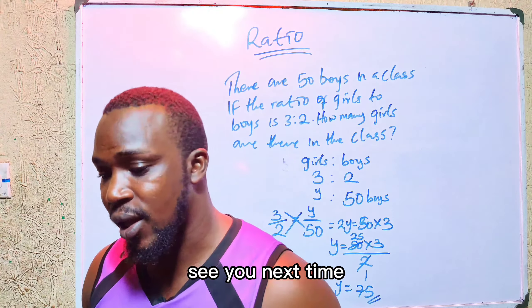We need to find the number of girls, which is unknown — call it y. We turn it into a fraction: 3 over 2 equals y over 50. Cross multiplying gives 2y equals 50 times 3. Dividing both sides by 2: y equals 50 times 3 divided by 2, which gives 25 times 3 equals 75. The total number of girls is 75.